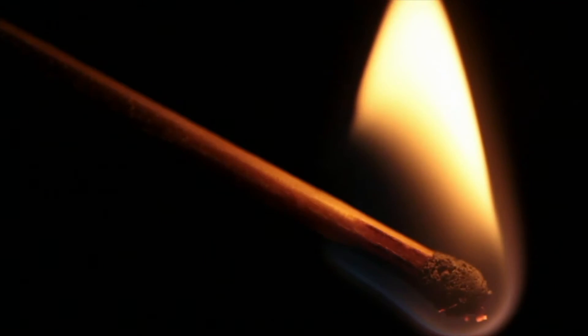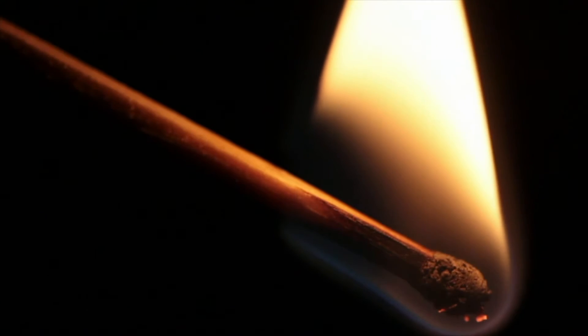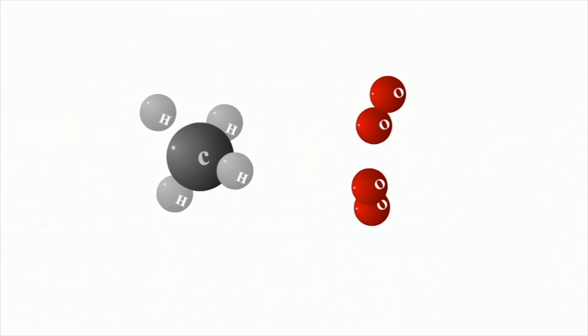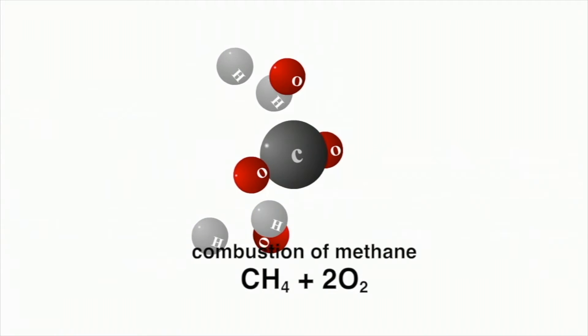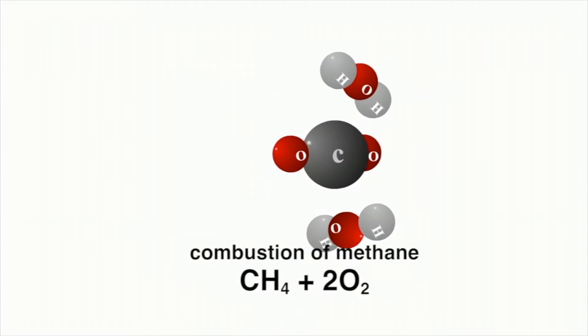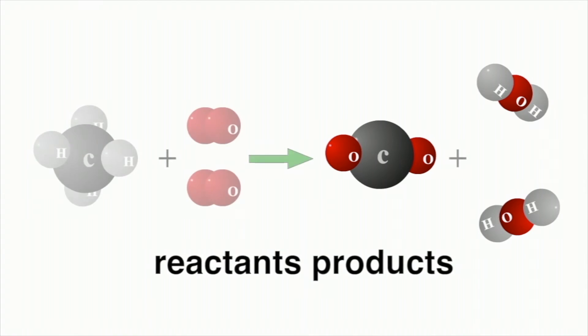Since no matter is created or destroyed in a chemical reaction, all the atoms in the reactants must be in the products. For example, in the combustion reaction of methane, the reactants have a total of one carbon atom, four hydrogen atoms, and four oxygen atoms. The products have exactly the same number of atoms.